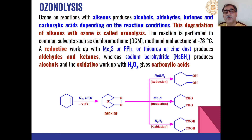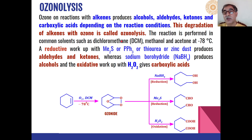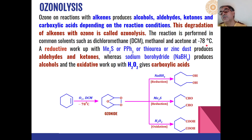The most common application of ozone is ozonolysis, where alkenes on reaction with ozone are converted into different types of products like alcohols, aldehydes, ketones, or carboxylic acids, depending on what kind of reaction conditions and workup are used. This degradation of alkenes in presence of ozone is called ozonolysis, and this reaction is performed mostly in common solvents like dichloromethane, methanol, and acetone at low temperature of around minus 78 degrees centigrade.